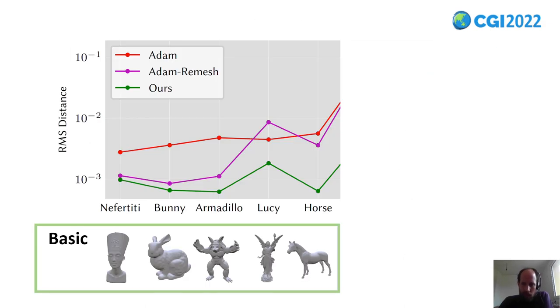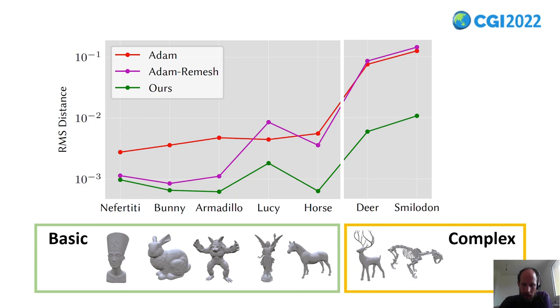Next, I added the more interesting complex objects. And I used the same default parameters for all three methods. The two baseline methods completely failed to reconstruct these objects. And with our method, we get useful results even after only three seconds.